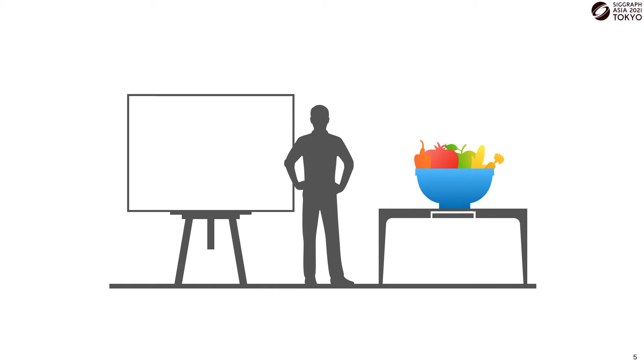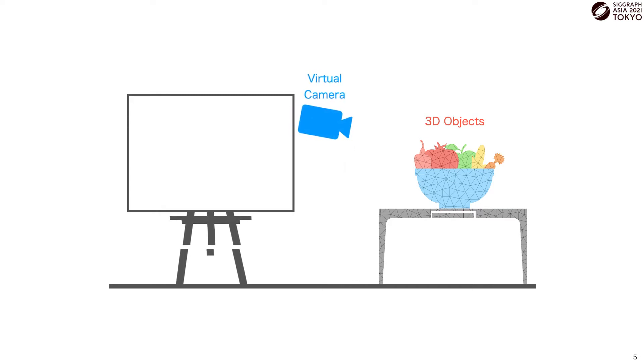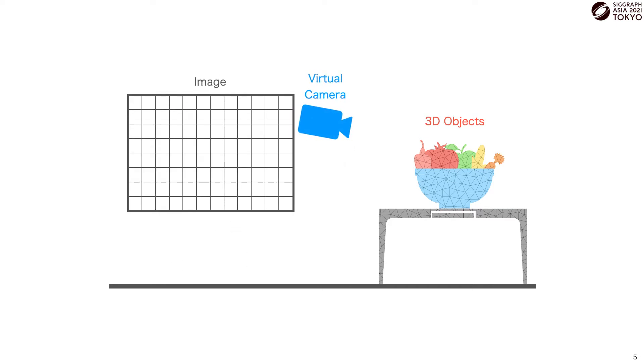In computer graphics, rather than real objects, we have data that represents 3D objects and a virtual camera. And we'd ideally like to simulate what an artist would do and automatically generate an image with plausible lines for them.